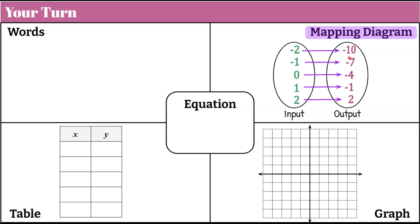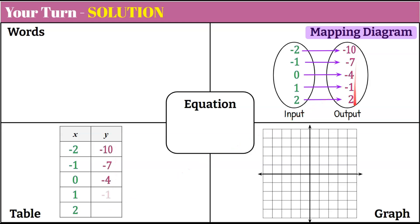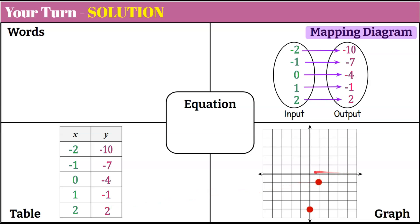Welcome back. So using our mapping diagram, the easiest thing to do would be to now go to my table. I'm going to start by taking my inputs and writing them into my table, then bring over the outputs. Now I have my table done. Next, I'm going to graph all my inputs. I can see that negative 2, negative 10 and negative 1, negative 7 won't fit on my graph, but 0, negative 4 will — here's my point. 1, negative 1. And 2, 2. We really only need two points to graph a line, but three of our ordered pairs fit on the graph provided. If we extended our graph, the others would be there too.